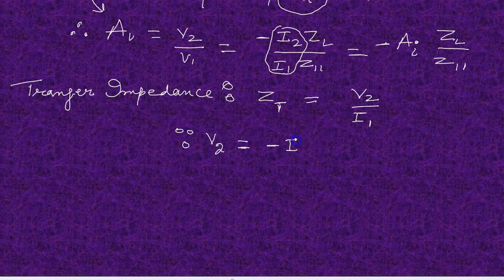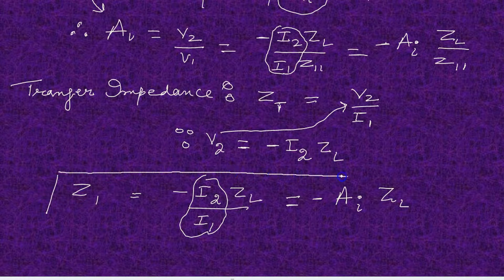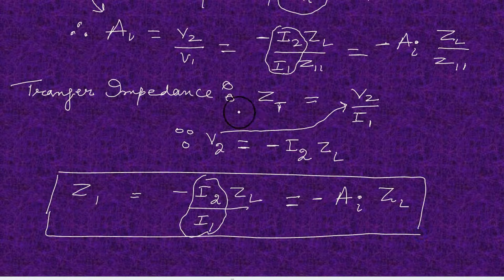Now we find the transfer impedance ZT, which means V2 over I1. V2 is minus I2 times ZL, so substituting, ZT becomes minus AI times ZL. This is ZT, the transfer impedance.